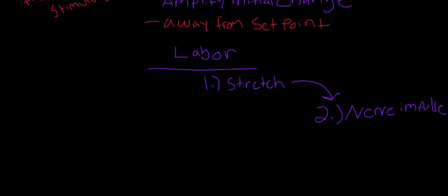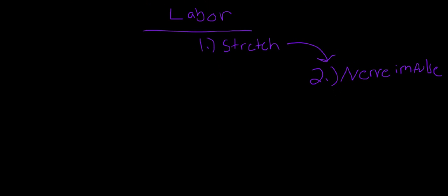This nerve impulse gets sent to the hypothalamus. And when it reaches the hypothalamus, it signals the posterior pituitary to release oxytocin.